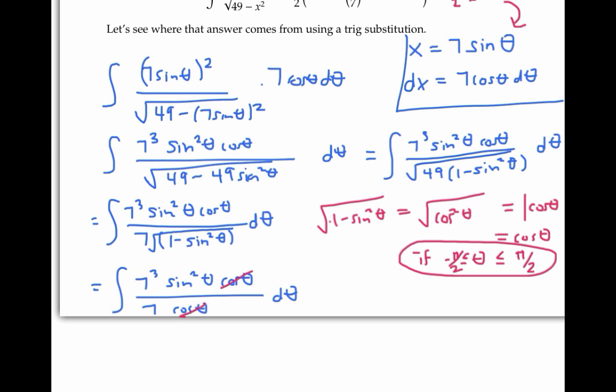Now, if we simplify, we just have to integrate seven squared sine squared theta d theta.